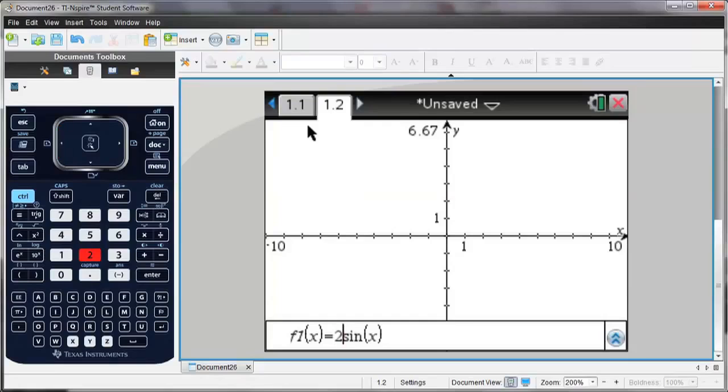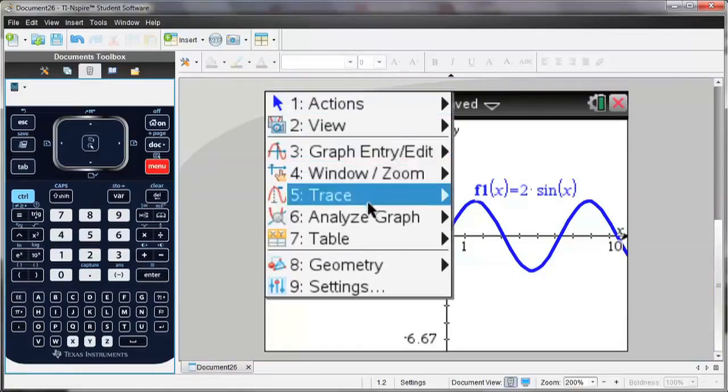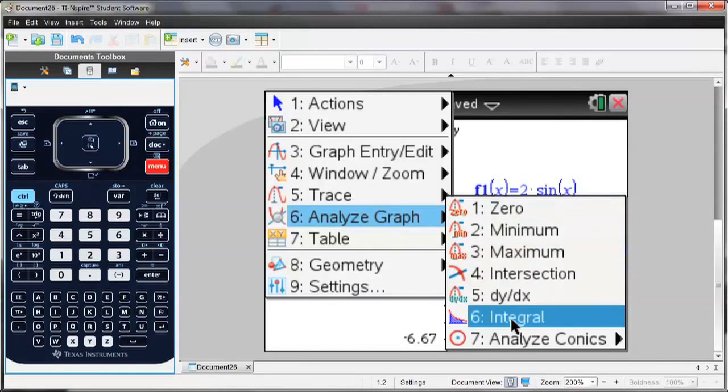And then I can also change the window, or if I wanted to define the value of the integral between two points. I hit menu, analyze graph, and then number 6 is integral.